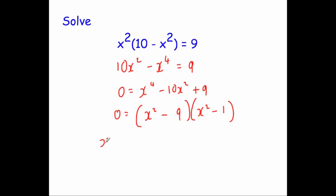That means we've got x² - 9 = 0, or x² - 1 = 0.